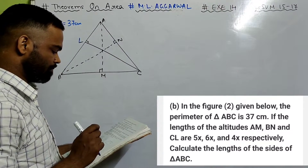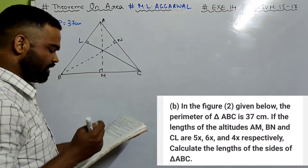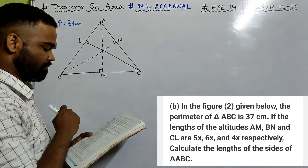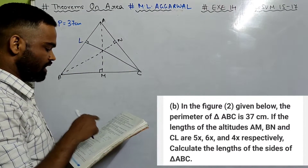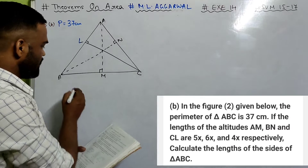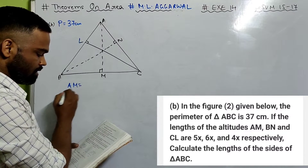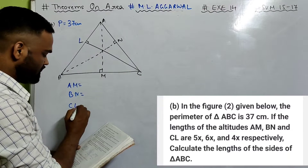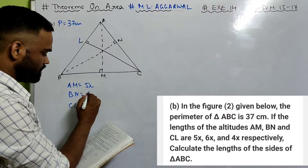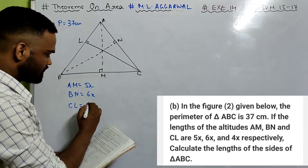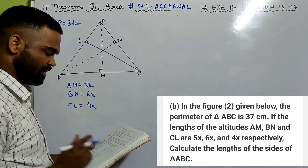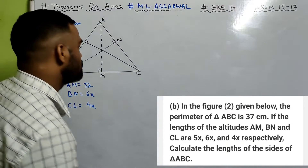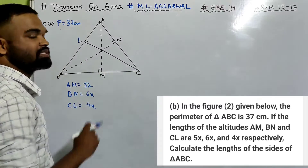In the figure given, the perimeter of triangle ABC is 37. The length of altitudes AM, BN, and CL are 5X, 6X, and 4X respectively. Calculate the length of the sides of triangle ABC.